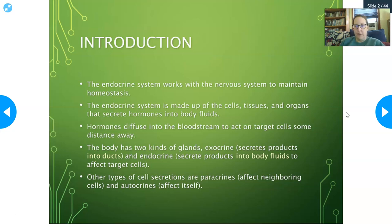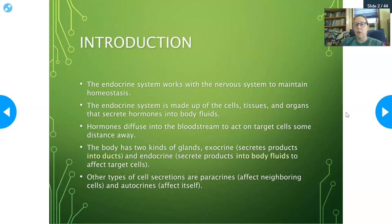Let's introduce the endocrine system. When you finished anatomy one, you finished with the nervous system. The endocrine system and the nervous system work together to maintain homeostasis, which is balance in the body. They're both necessary and one can't work without the other. They are an integrated system and together they are the control system. The endocrine system is made up of cells, tissues, and organs that secrete hormones into body fluids, which then diffuse into the bloodstream and act on target cells some distance away. There are also some hormones that act really locally, just from cell to cell or within an organ.